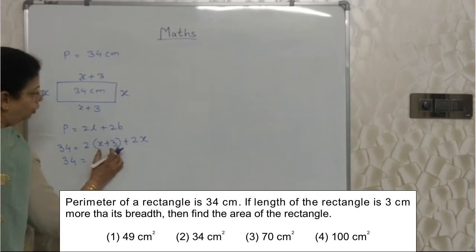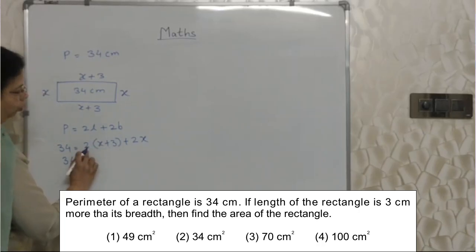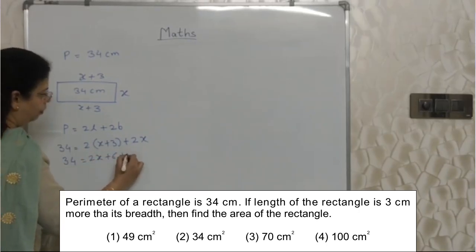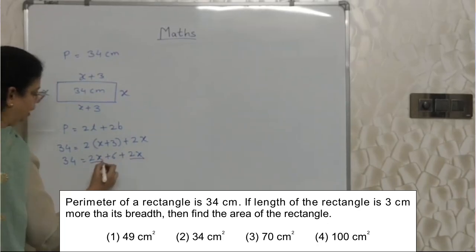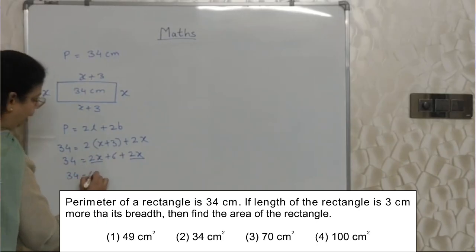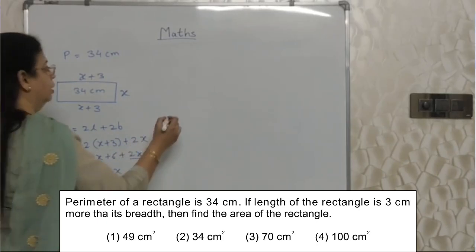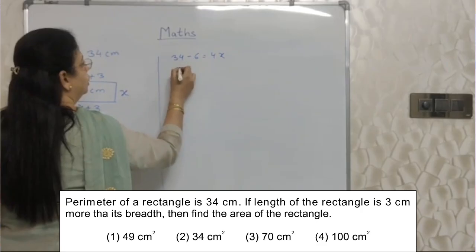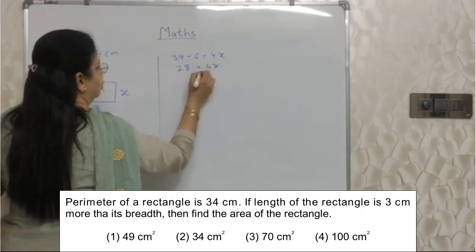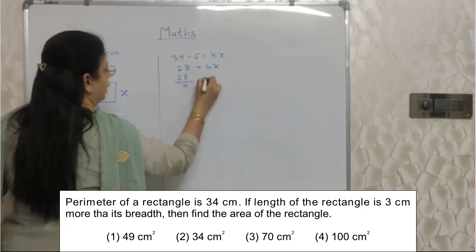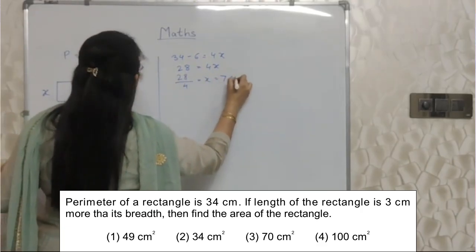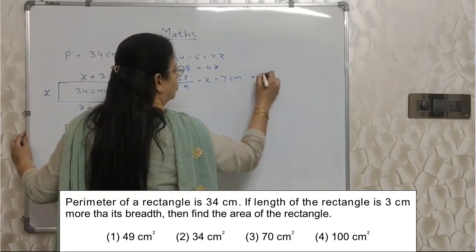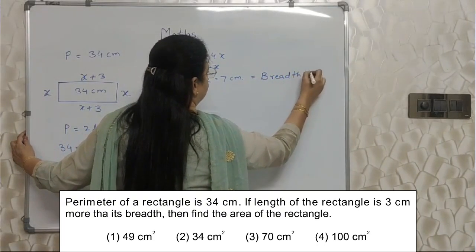34 equals 2 into (x plus 3). This entire bracket is multiplied by 2, so x will be multiplied by 2, and 3 will also be multiplied by 2. So we get 2x plus 6 plus 2x. Collecting x terms together and moving 6 to the other side: 34 minus 6 equals 4x. So 28 equals 4x, which gives x equals 28 divided by 4, that is 7 centimeters. So now we know the breadth is 7 centimeters.